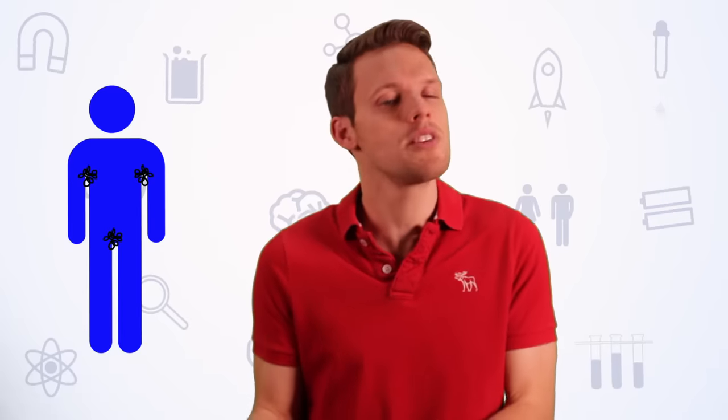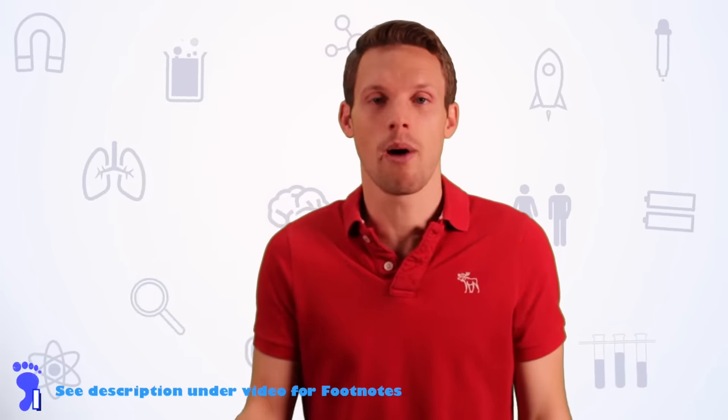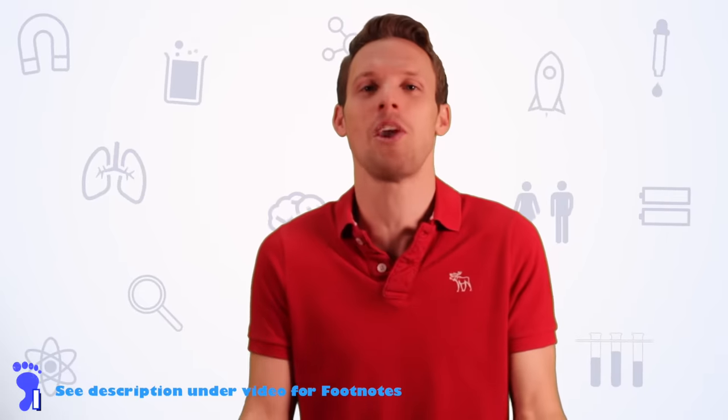So first up, the science. Pubic hair sprouts up under the arms and around the groin at different times for different people. For girls, it's roughly between the ages of 8 and 14. For boys, roughly 10 to 15. And it's stimulated by those ever-changing, pesky hormones.